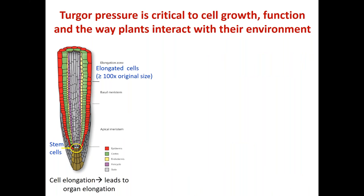Turgor pressure is really important for cell growth and elongation, responsible for the bulk of organ elongation, like the root. The stem cell population in roots — just a couple of cells called the quiescent center — are dividing and giving rise to new cells. These new cells respond to plant hormones and start expanding or elongating, and their final size can be a hundred or a thousand times more than their initial size. This is really what gets the root to grow long and grow into the soil.